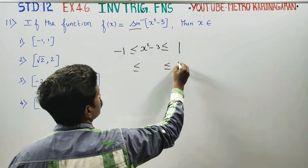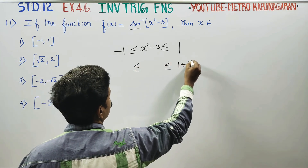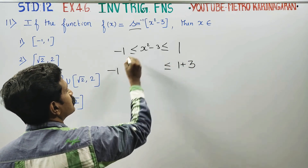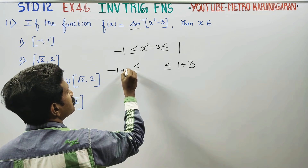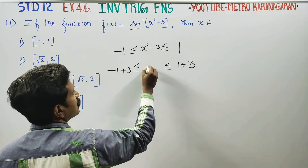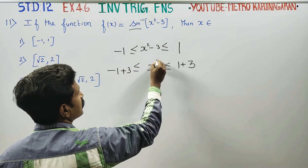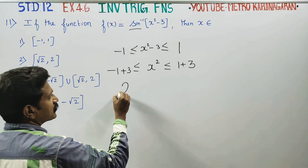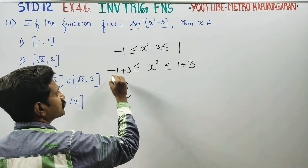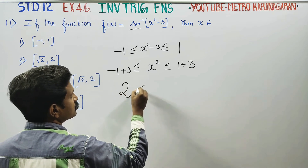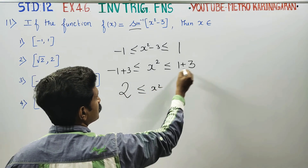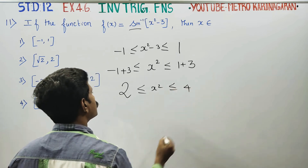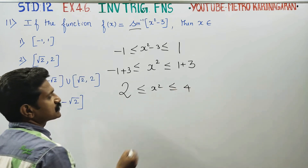Adding 3 throughout: minus 1 plus 3 becomes 2, and 1 plus 3 becomes 4. So we get: 2 is less than or equal to x squared, less than or equal to 4.